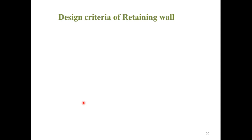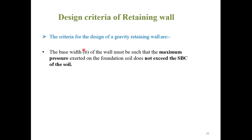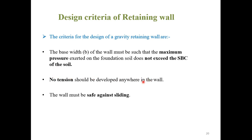Design criteria of a retaining wall: We must consider some important points. The base width of the wall must be such that the maximum pressure exerted on the foundation soil does not exceed the soil bearing capacity. No tension should be developed anywhere in the wall. The wall must be safe against sliding. And the wall must be safe against overturning.